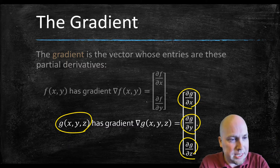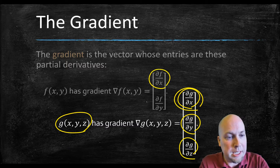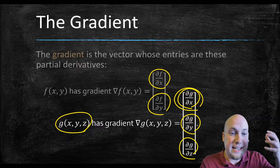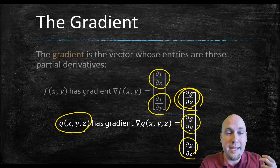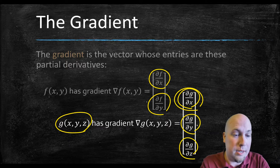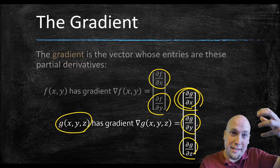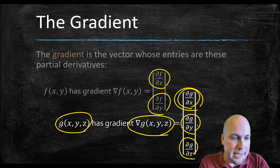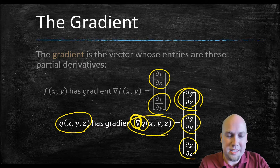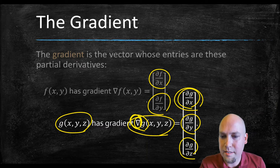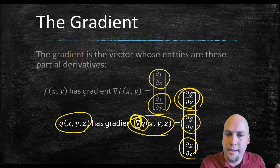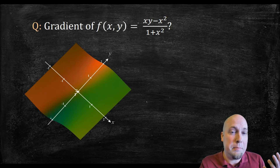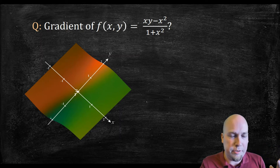These gradient vectors are functions of x, y, and z as well — you can plug in values to get numeric vectors. The name we give to this vector-valued function is the gradient, and we denote it with a nabla symbol — like an upside-down delta. So the gradient of a two-variable function f(x, y) is a two-dimensional vector whose entries are the partial derivatives with respect to x and y. For three variables, the gradient similarly has three entries.